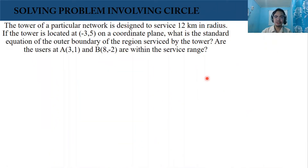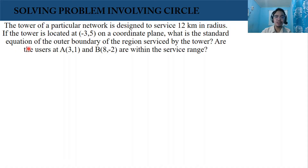Solving a problem involving a circle. The tower of a particular network is designed to service 12 kilometers in radius. If the tower is located at negative 3, 5 on a coordinate plane, what is the standard equation of the outer boundary of the region serviced by the tower? Are the users at point A (3, 1) and point B (8, negative 2) within the service range?